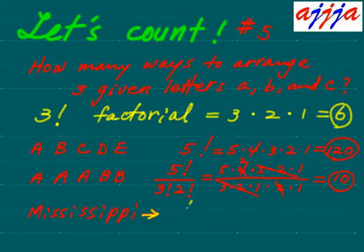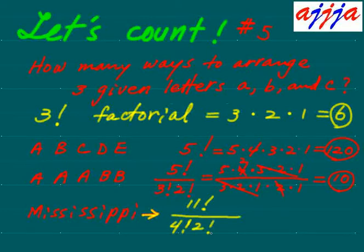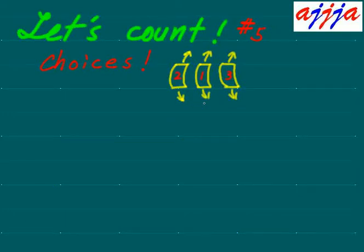Now, Mississippi! Can you display this word in different ways? How many? Very simple — total letters: eleven, so eleven factorial on top. Then look at the repeated letters: four S's give four factorial, two P's give two factorial, and four I's give four factorial. Divide eleven factorial by all of those. You can calculate this in a minute!